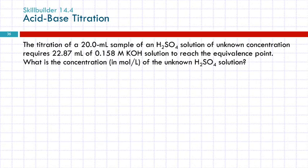So let's do a calculation for an acid-base titration. The titration of a 20-mL sample of a sulfuric acid solution of unknown concentration requires 22.87 milliliters of 0.158 molar KOH solution to reach the equivalence point. What is the concentration in moles per liter of the unknown sulfuric acid solution?